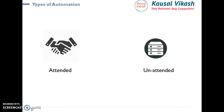RPA is an intelligent software that helps to replicate and mimic human interaction with the computer. Essentially, it helps to build and deploy a digital workforce — robots or bots — into business processes that automate simple, routine, and mundane activities, which really helps to free up a lot of human workforce bandwidth.